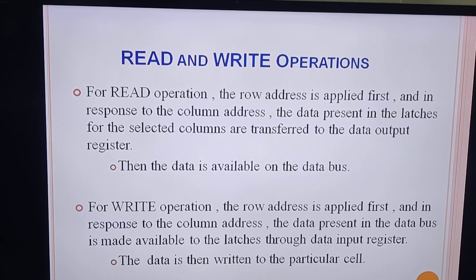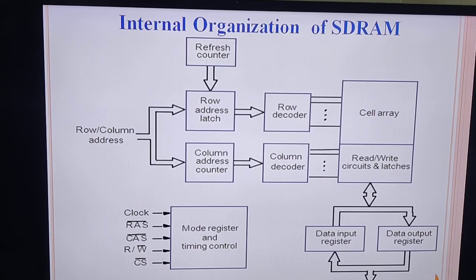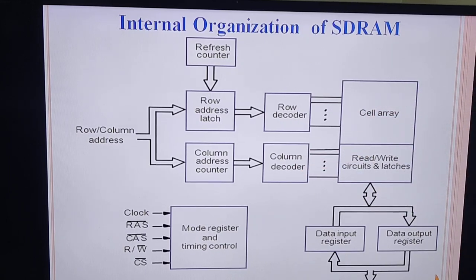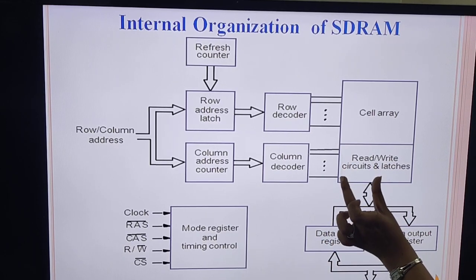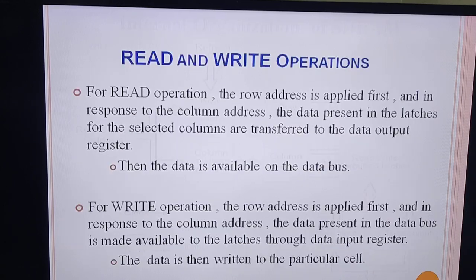For the write operation, the row address is applied first, and in response to the column address, data present on the data bus is made available to the latch through the data input register. First the row address is selected, then the column address is selected. Whatever data is on the data bus is placed into the data input register, from which it is stored in the particular latch, and from the latch it is stored to the particular cell selected using the row and column address.